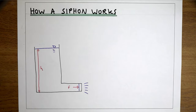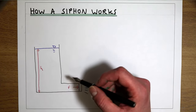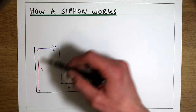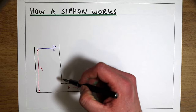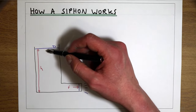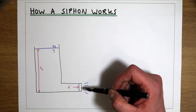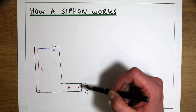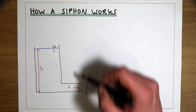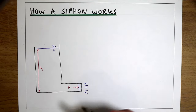A few videos back in this series we looked at analysing this system using Bernoulli's equation to show how the height of water H leads to a flow mathematically. So if you want to see a more analytical explanation of this, I'll put the link to that video in the description.